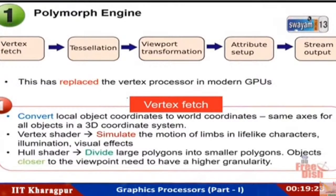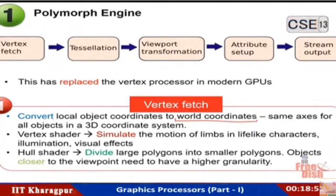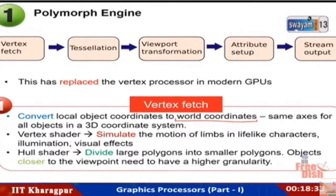In the vertex fetch stage, we convert local object coordinates to world coordinates — a common coordinate system (XYZ axes) for all objects. We fetch the vertices and do geometric operations: simulating motion of limbs in lifelike characters, moving objects like a bullet, and looking at visual effects such as illumination and shading.